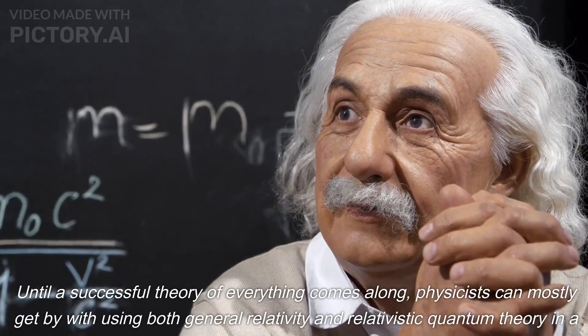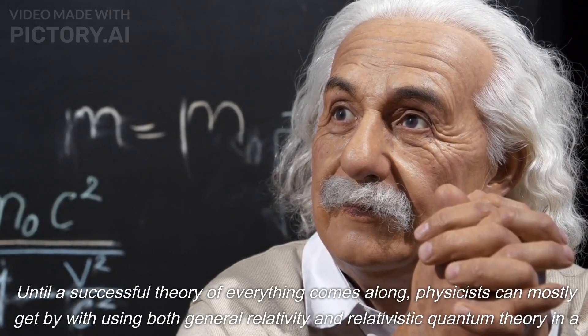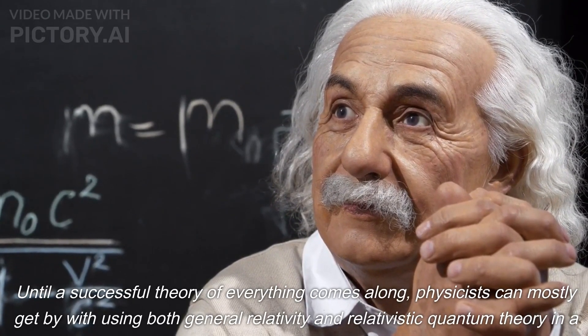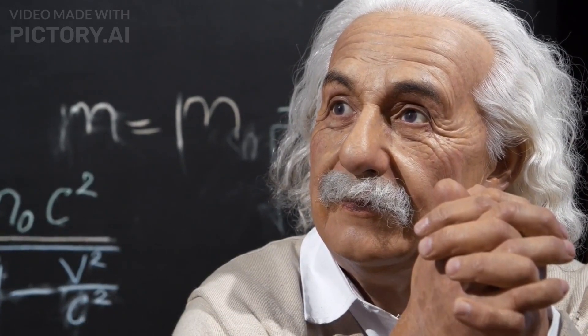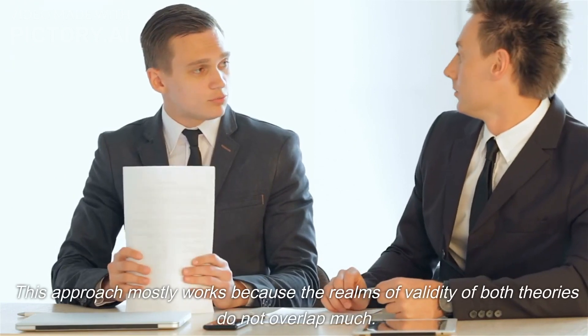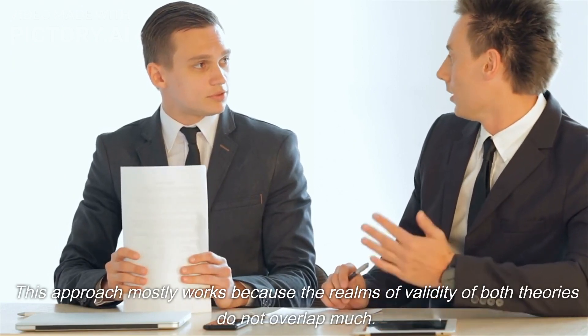Until a successful theory of everything comes along, physicists can mostly get by with using both general relativity and relativistic quantum theory in a patchwork manner. This approach mostly works because the realms of validity of both theories do not overlap much.